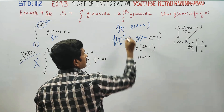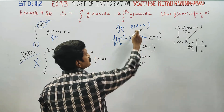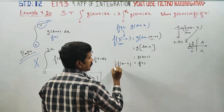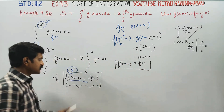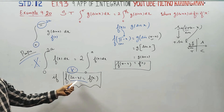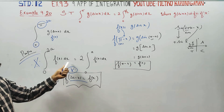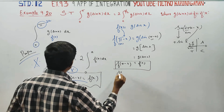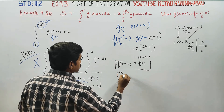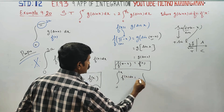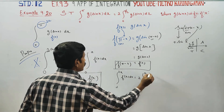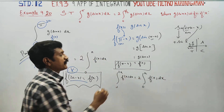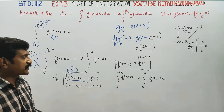Therefore, g of sin x equals f of x. You started with f of pi minus x and you have ended in f of x. That is why f of 2a minus x equals f of x is satisfied, and we can apply: integral from 0 to 2a of f(x) dx equals 2 times integral from 0 to a of f(x) dx.